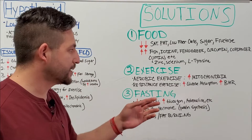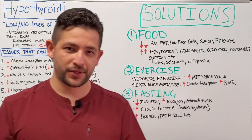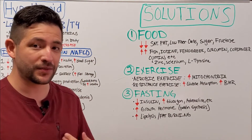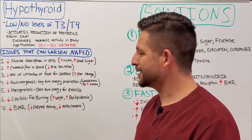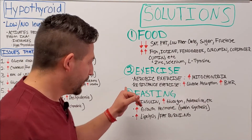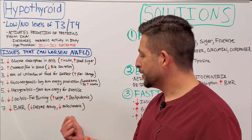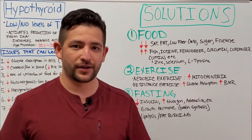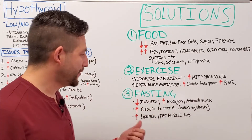Resistance exercise — things like dumbbells, kettlebells, and bodyweight exercises like push-ups and squats — is really important because it promotes glucose absorption. With resistance exercise, you're manually forcing your muscle cells to pull glucose and sugar out of your blood, which helps with insulin resistance and makes you more insulin sensitive, helping to reverse a major factor in fatty liver development. Your total BMR will also increase because you're utilizing more calories, building more mitochondria, and your muscles are getting bigger and stronger.